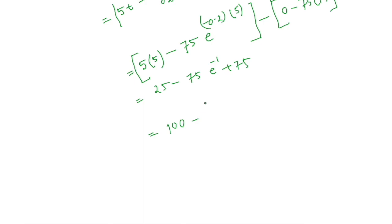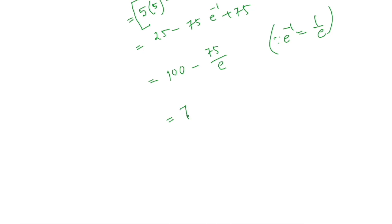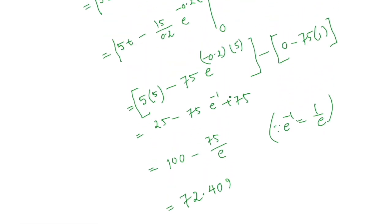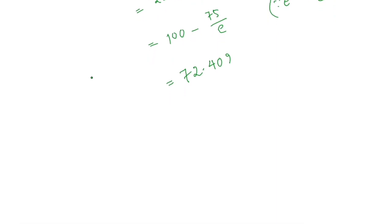So the result equals 25 minus 75 times e to the power minus 1, plus 75. Note that e to the power minus 1 equals 1 divided by e. Using a calculator, this gives approximately 72.409 million pounds.